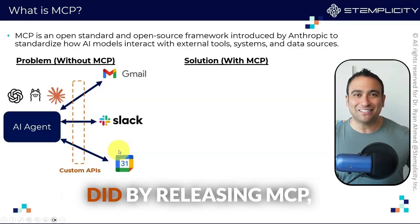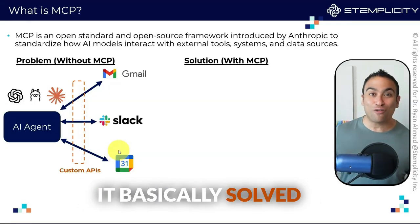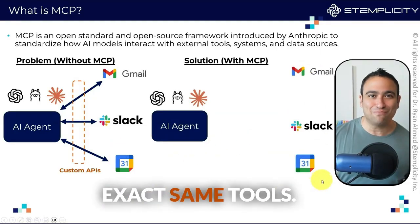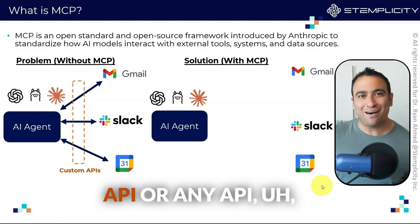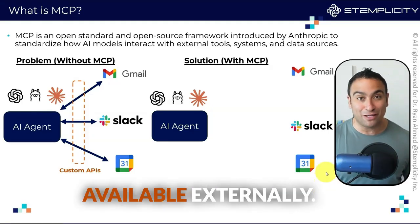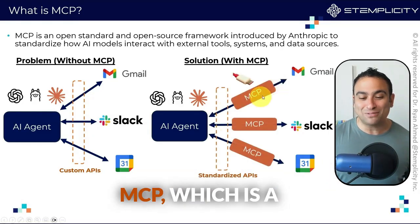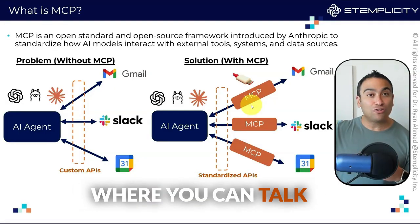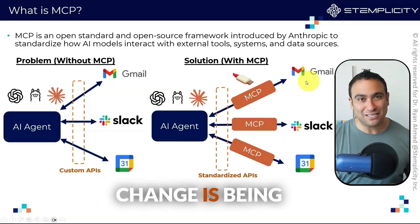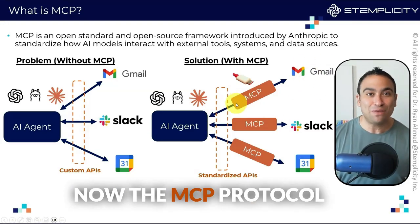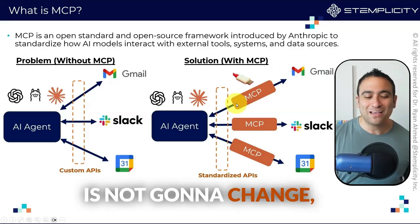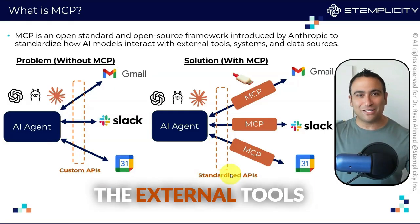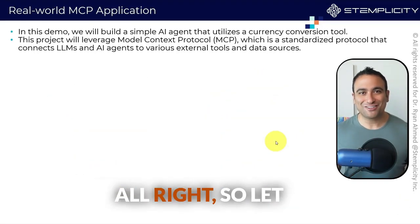What Anthropic did by releasing MCP basically solved that problem. Now we have the same AI agent and the same tools — external tools like a weather API or any externally available API — and now using MCP, which is a standardized way, you can have a common framework to talk to all these different tools. Even if any change is made on the tool side, the MCP protocol doesn't change. So you now have a standardized API, a standardized language, between the AI agent and all the external tools.